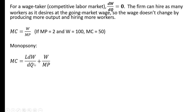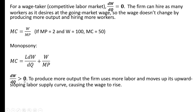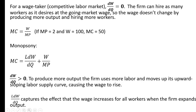For a monopsony we have this added component. The sign of this derivative — the derivative of the wage equation with respect to output — is going to be greater than zero. To produce more output the firm uses more labor and moves up its upward sloping labor supply curve, causing the wage to rise. This L times this derivative captures the effect that the wage increases for all workers when the firm expands output.